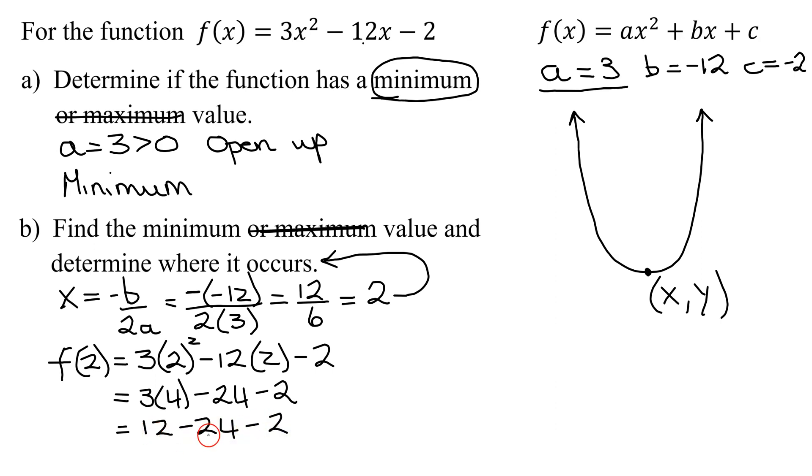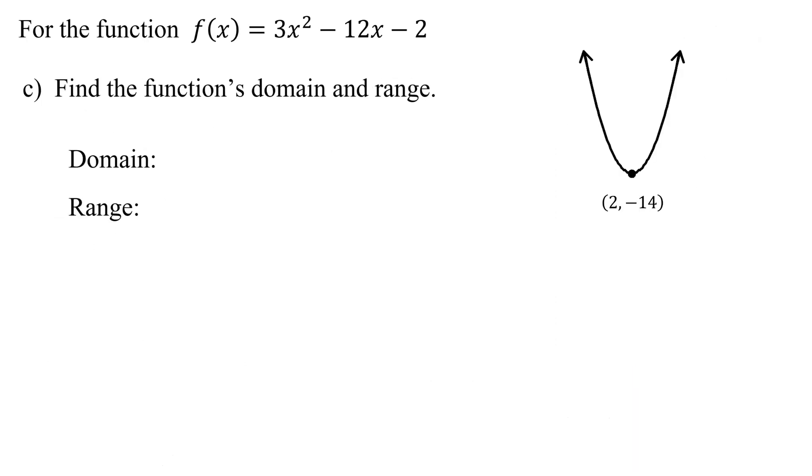12 minus 24 is negative 12. Negative 12 minus 2 is negative 14. So the minimum value of my function equals negative 14. And it occurs when x equals 2. As I'm running out of room, I need to go to the next slide. I've rewritten my function, and this is the information we already found. Our parabola opens up. It has a minimum value. And these are the coordinates of the vertex.